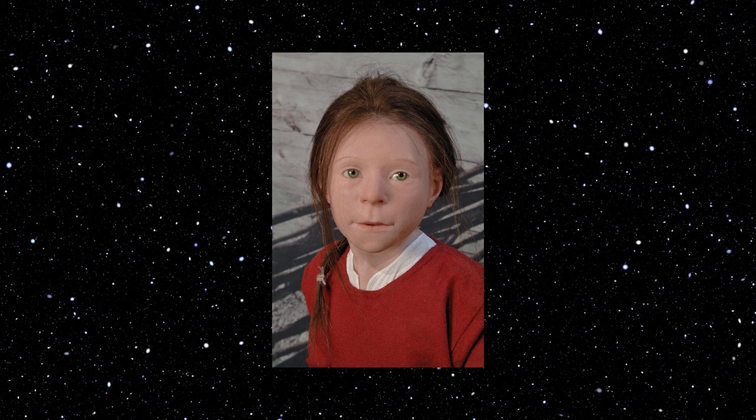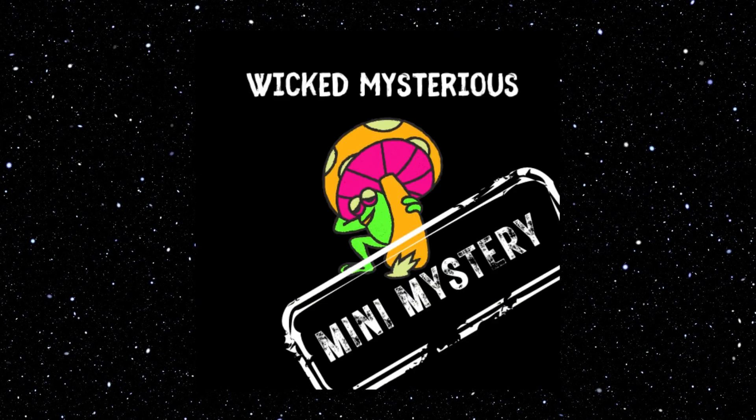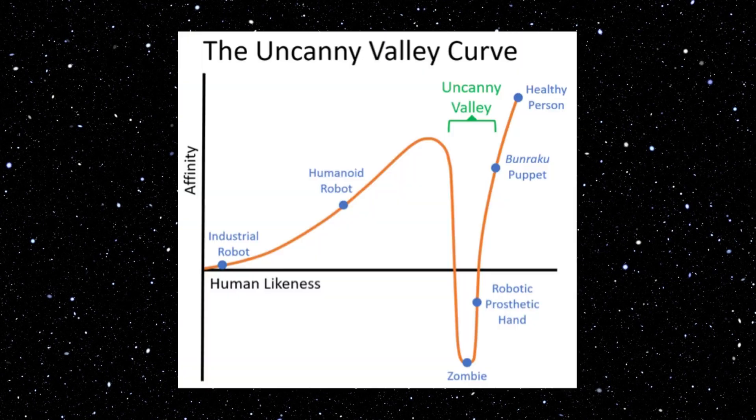I'm pretty sure the Uncanny Valley just refers to human likeness — like the human likenesses in Avatar and how those creatures resemble. Affinity is how much you like it versus dislike it, and human likeness is how much it actually looks like a human. Some of the things on the graph include an industrial robot — we don't necessarily like it, but it doesn't really look like a human.